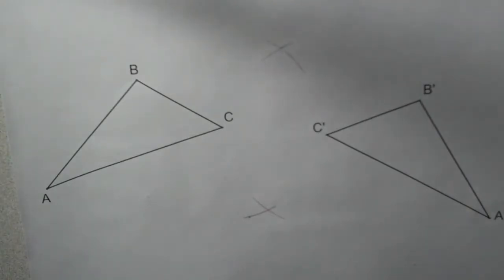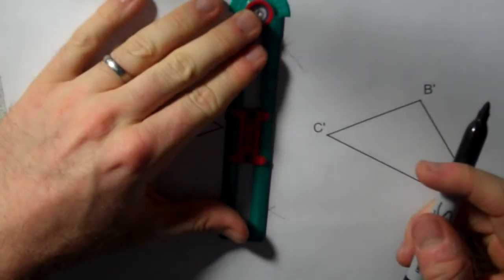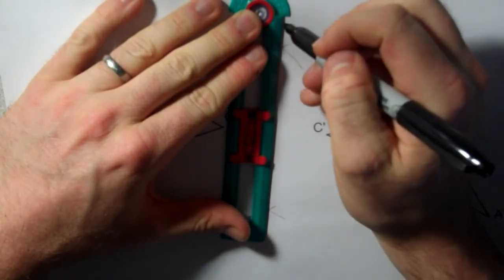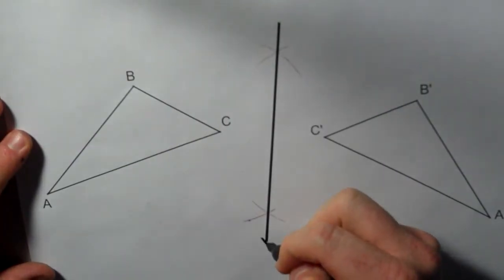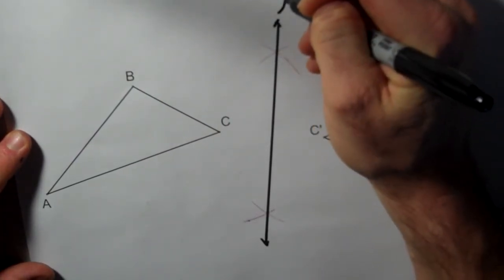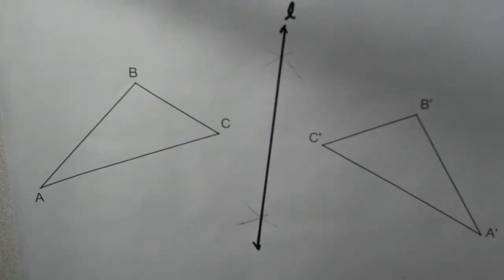And if I connect those points that I have created, this line, line L, is the line of reflection that caused this transformation. Thank you so much for watching.